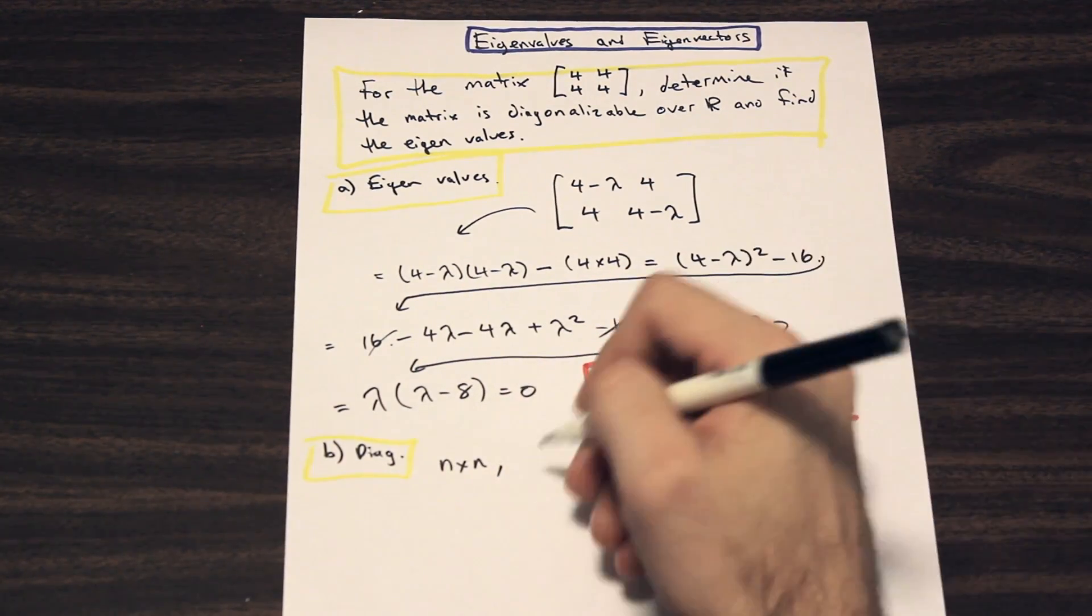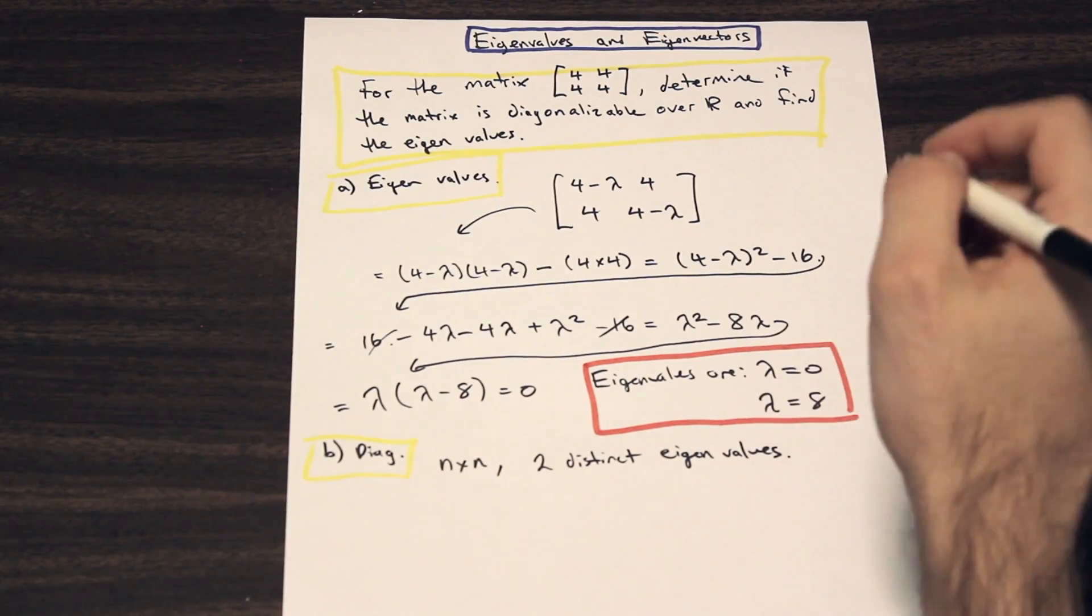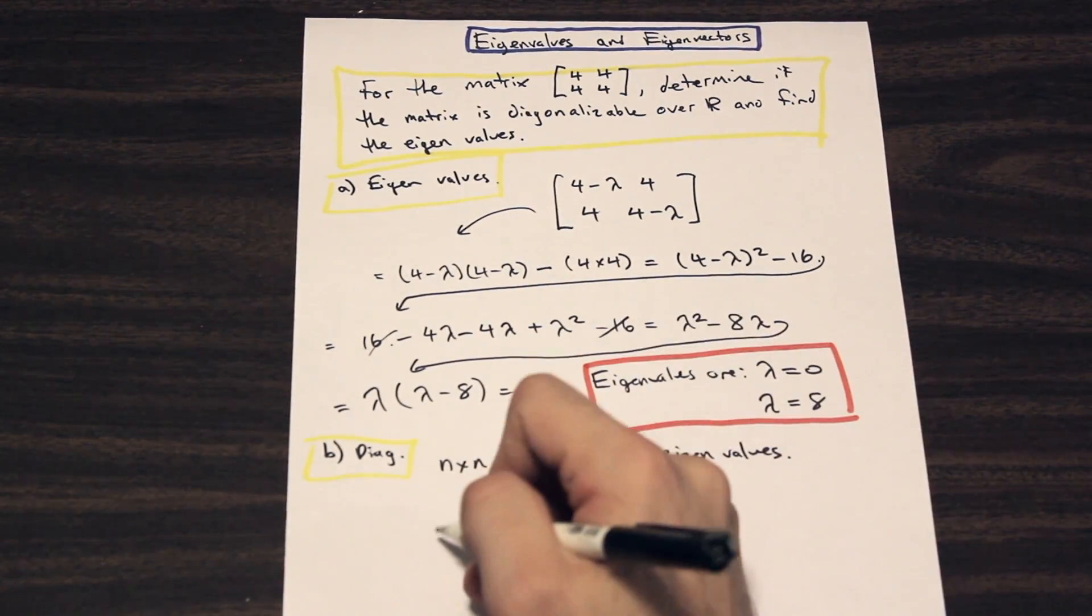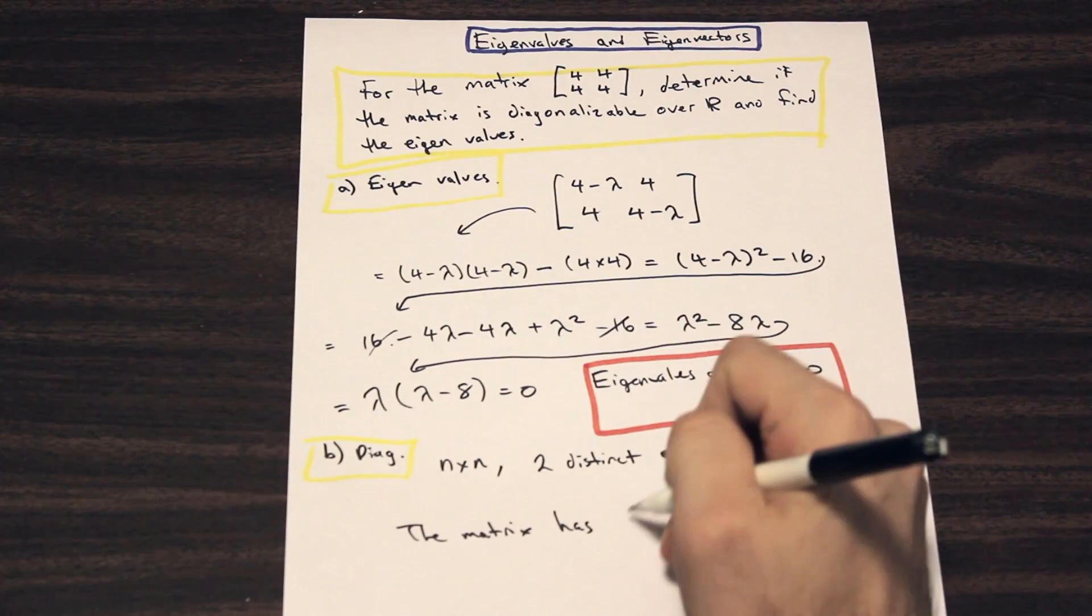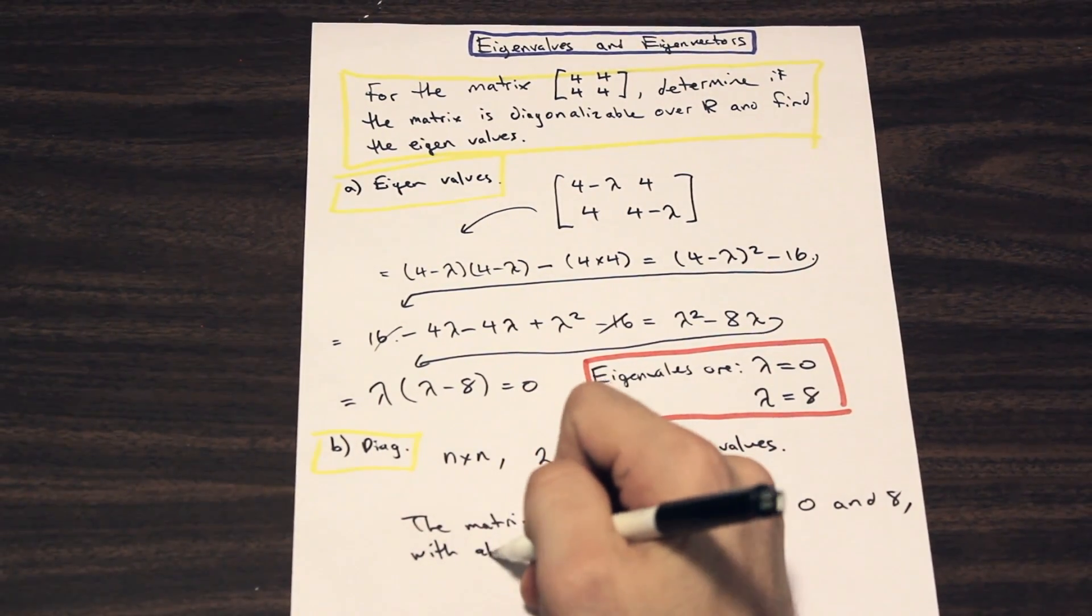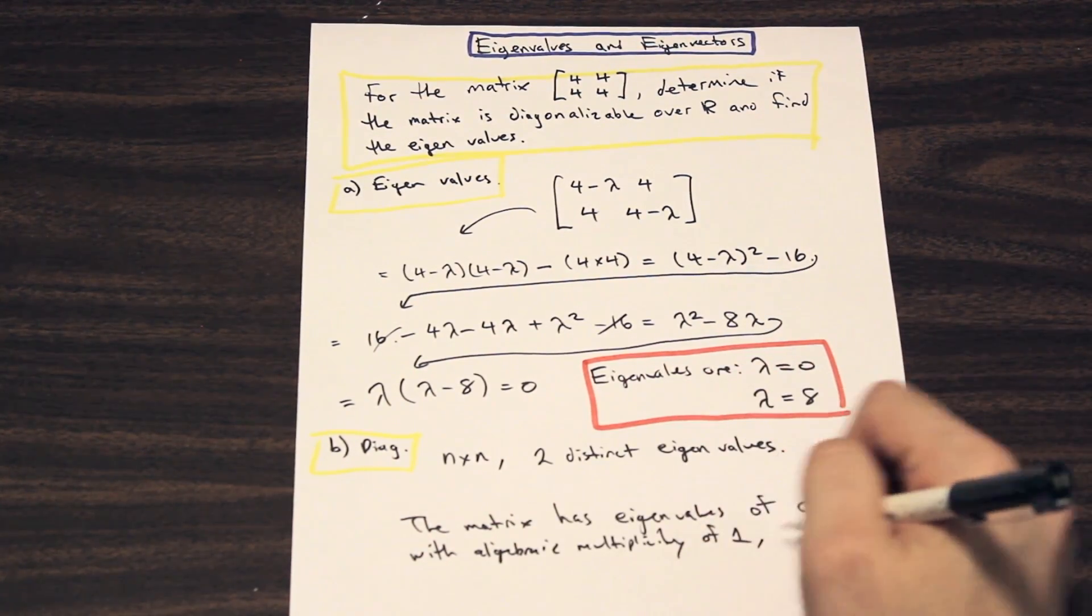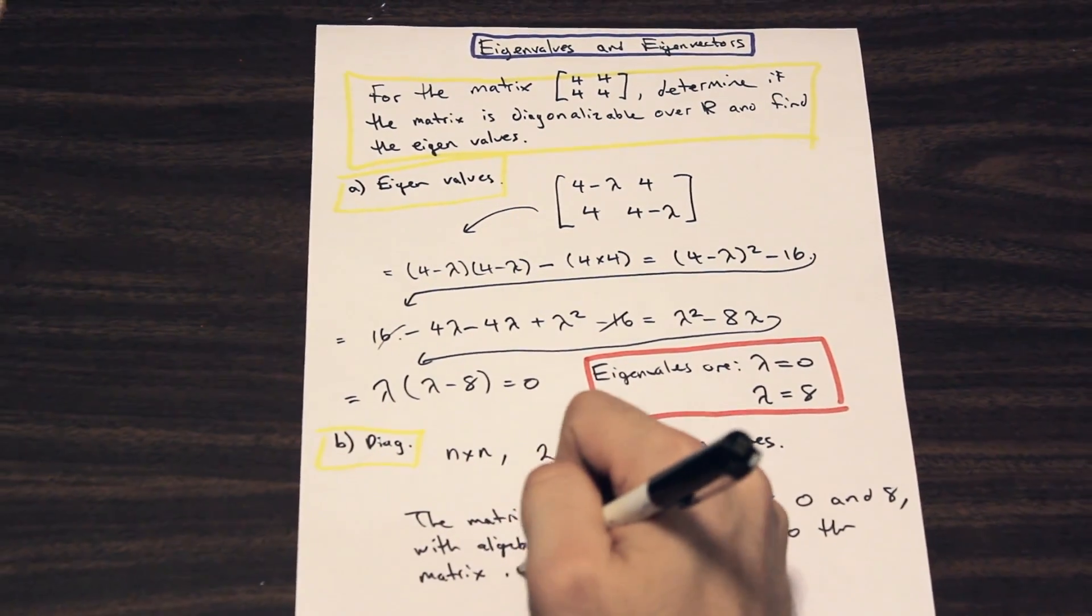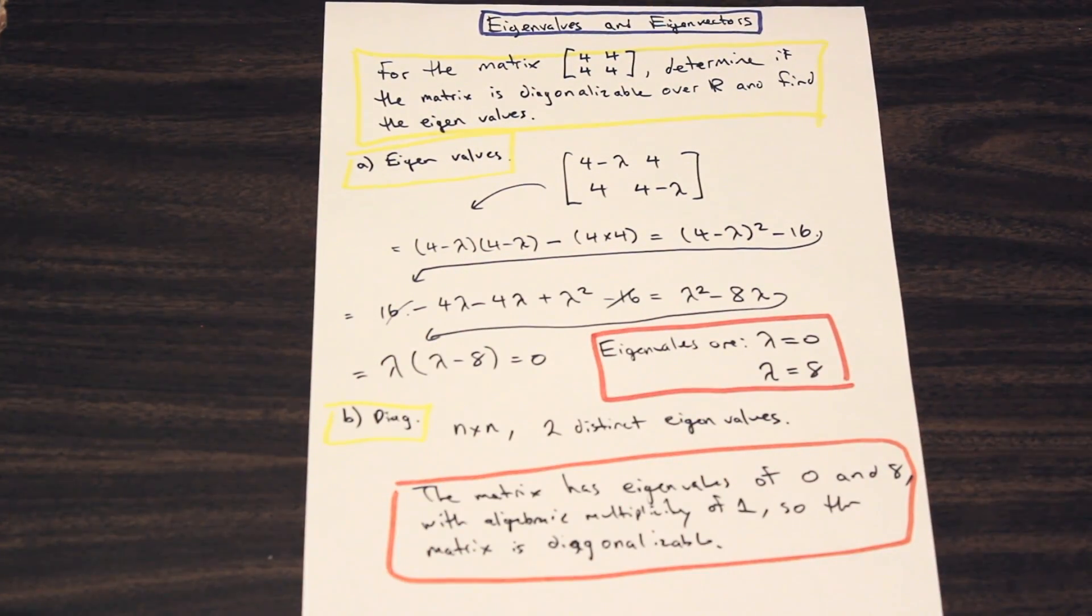What I'm going to write here, you could probably include in the answer with your eigenvalues. We say that since the matrix has eigenvalues of 0 and 8, with algebraic multiplicity of 1—I'll explain what that means in a second—then we can say that the matrix is diagonalizable. You just have to write out a little bit of a long answer there, explaining the reason why it's diagonalizable.